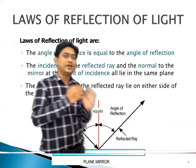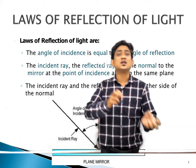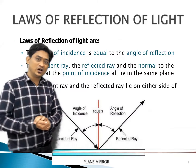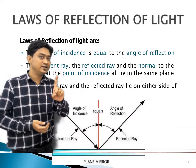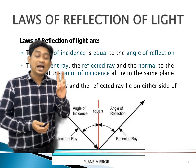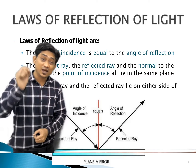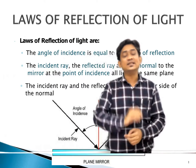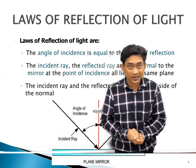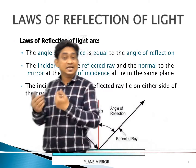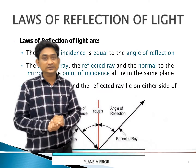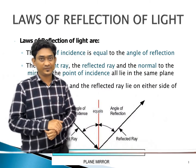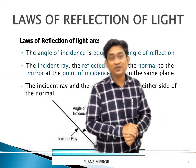Now, next, very important according to exam point of view — what are the laws of reflection? There are two important laws. First law: incident ray, reflected ray, and normal must lie in the same plane. Second law: angle of incidence is equal to angle of reflection. That means if angle of incidence is 30 degrees, then angle of reflection also becomes 30 degrees. These are the laws of reflection, which are very very important.